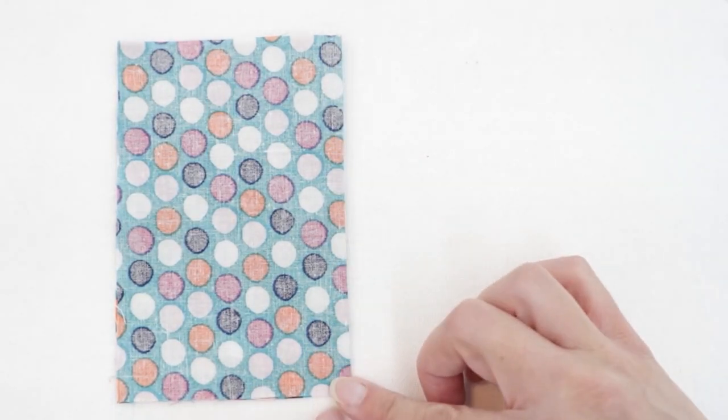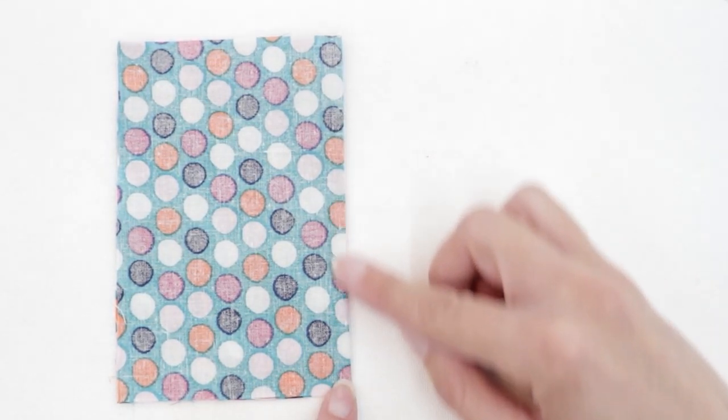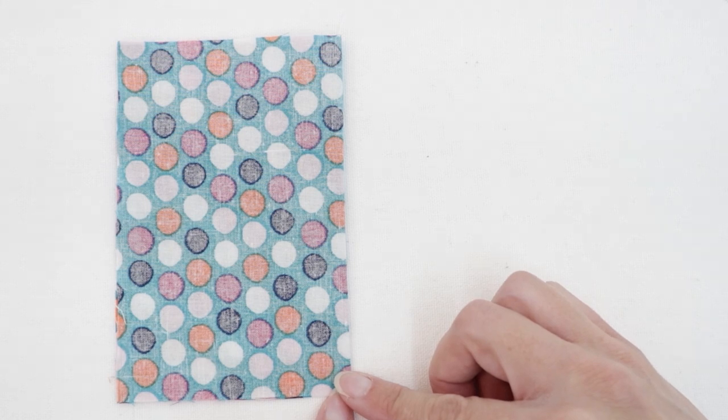Since I'm pretty confident that mine's the correct size, I'm going to go ahead and stitch with a 3/8 inch seam allowance along this edge.